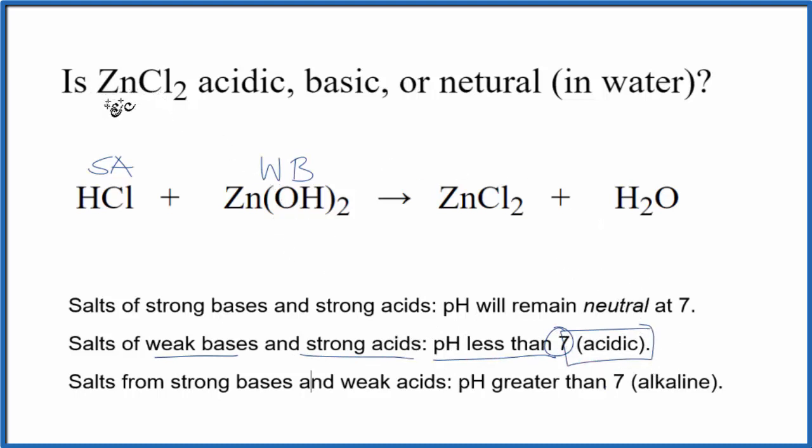So in answer to our question, when ZnCl2 is dissolved in water, the solution that results will be an acidic solution with a pH less than 7.